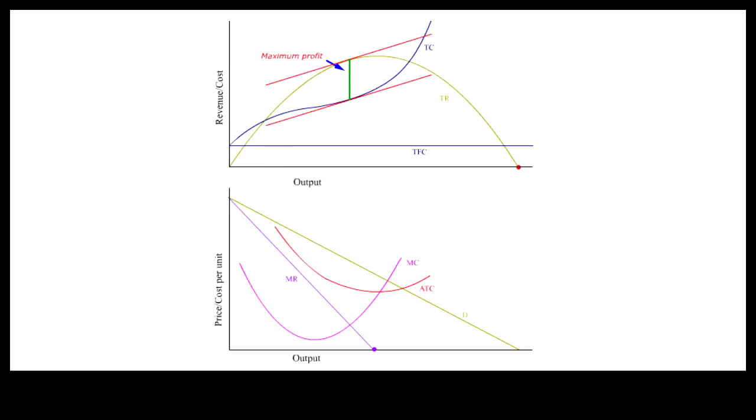The firm identifies the maximum profit output level where TR minus TC is the greatest. This output level occurs where the slopes of the tangents to TC and TR are equal. Since the slope of the tangent to TR is equal to MR and the slope of the tangent to TC is equal to MC, when the slope of these two tangents are equal, MR is equal to MC. That means we can directly determine the maximum profit output by the intersection of MR and MC.